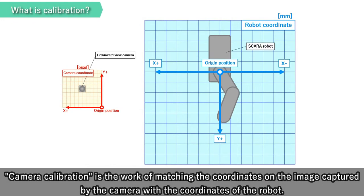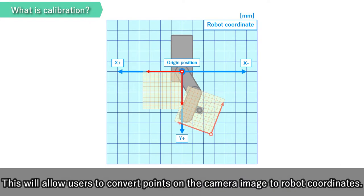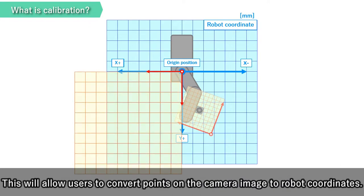Camera calibration is a work of matching the coordinates in the image captured by the camera with the coordinates of the robot. This will allow users to convert points on the camera image to robot coordinates.